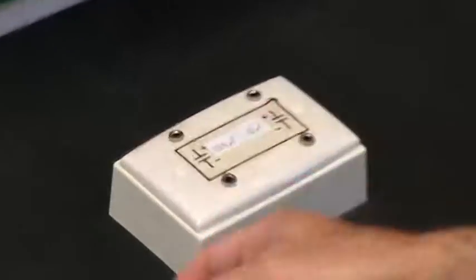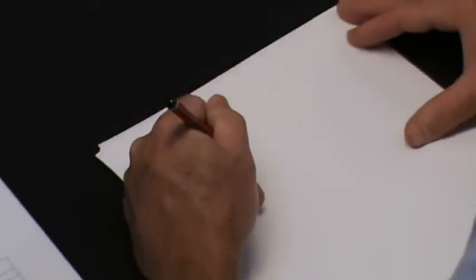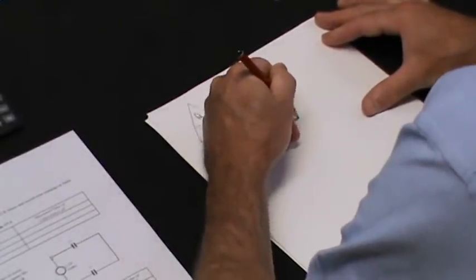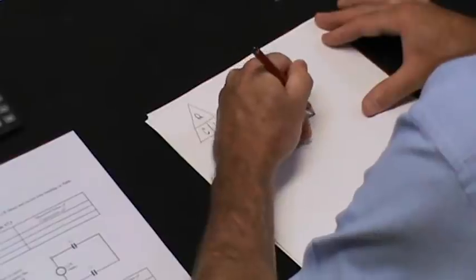We've got a 100 microfarad capacitor and a 10 microfarad capacitor. If I connect those two capacitors up in series, the calculation formula is 1 on Ct equals 1 on C1 plus 1 on C2.